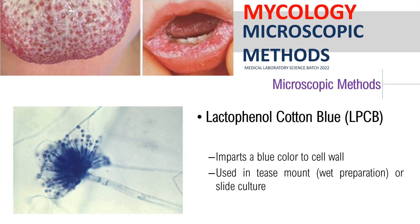The next stain is lacto-phenol cotton blue, or LPCB. The principle of LPCB is that it imparts a blue color to your cell wall — specifically, to the cell wall of your fungal element. It is used in teased preparation, wet preparation, or slide culture. Usually, we perform LPCB when there is aerial mycelia; we take a part of the aerial mycelia and add lacto-phenol cotton blue. This is typically seen with Aspergillus species, although through microscopic appearance we cannot actually identify the species level.